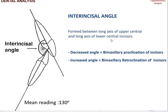The last component of dental analysis is the interincisal angle, formed between the long axis of the upper central incisor and the long axis of the lower central incisor. A decreased angle indicates bimaxillary proclination — that is, both the upper and lower centrals are proclined. If the angle is increased, it means there is retroclination of both upper and lower incisors.